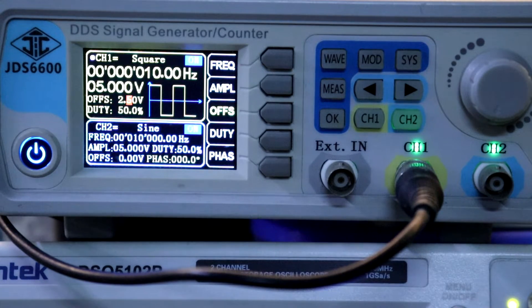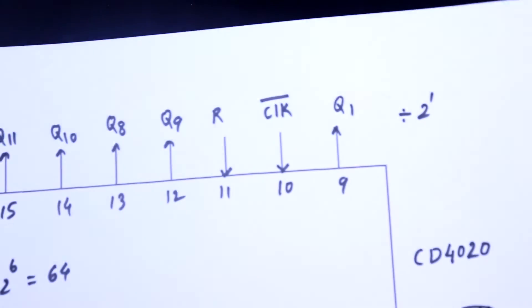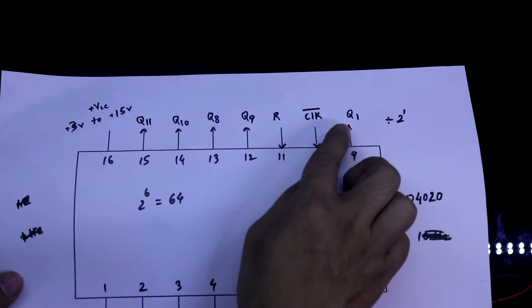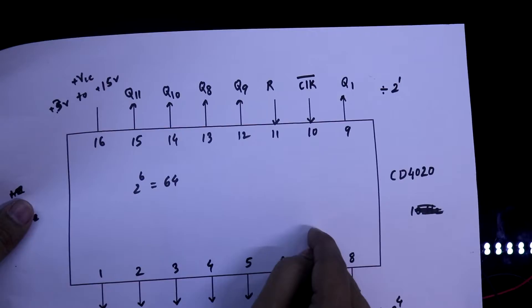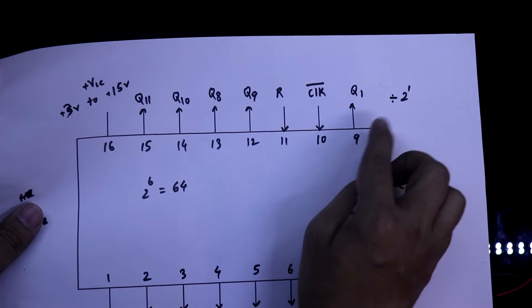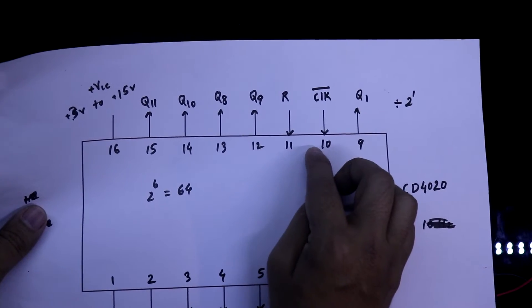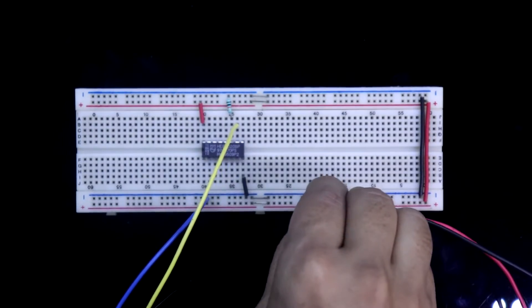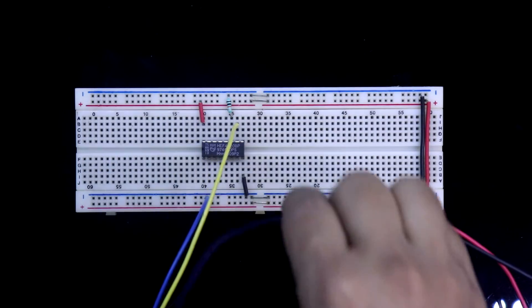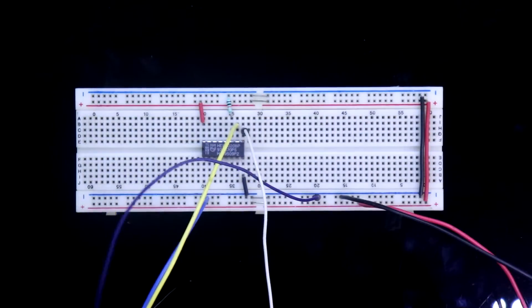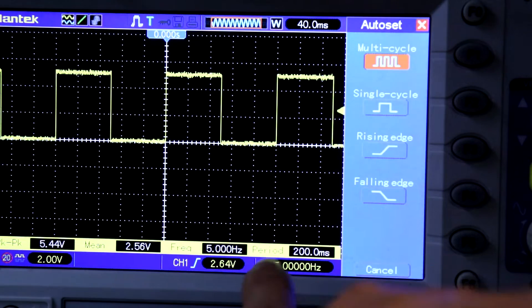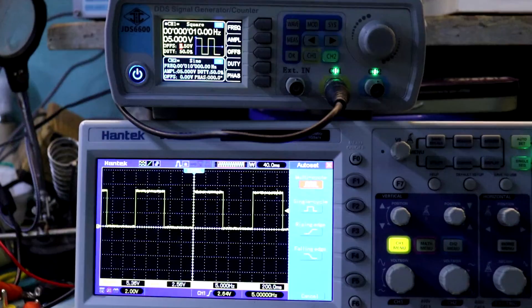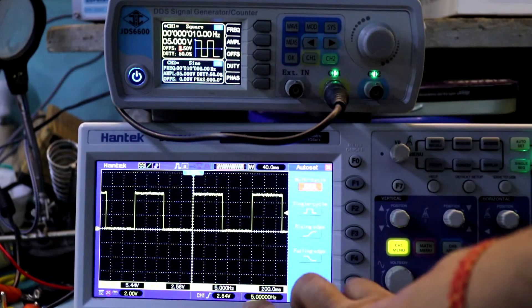Now, the input frequency is 10 hertz. And according to the pin diagram, you can see, pin number 9 is Q1. It means it is 2 to the power 1. So the input frequency will be divided by 2. So whatever the input frequency will be, pin 9 will give its half. Oscilloscope negative and positive is connected with pin number 9. As you can see here, the frequency at pin number 9 is 5 hertz. The input is 10 hertz and we are getting 5 hertz.